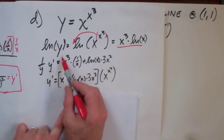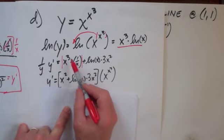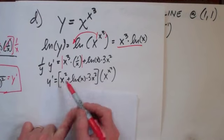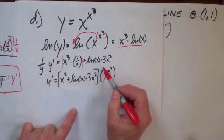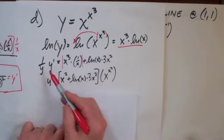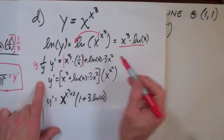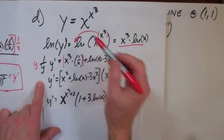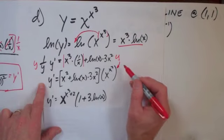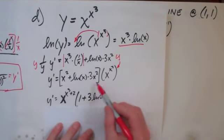Now this is simplifiable right there. That is going to cancel an X. I get X squared. Then here I've got the 3X squared. And then it's times to get Y by itself. I'm going to multiply both sides by Y. And that's what Y is equal to right there. So I'm done when I get to this stage.